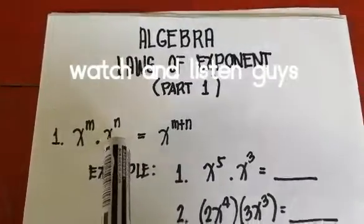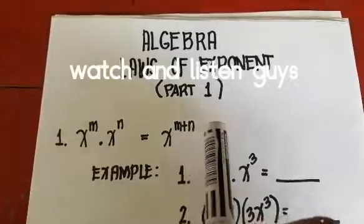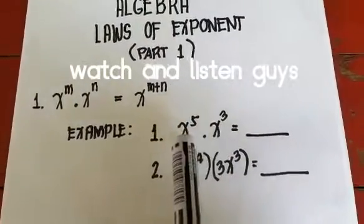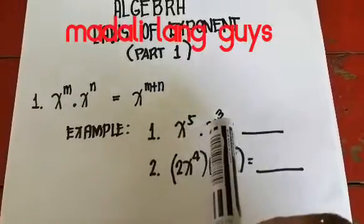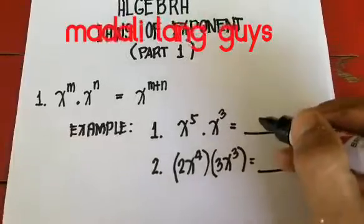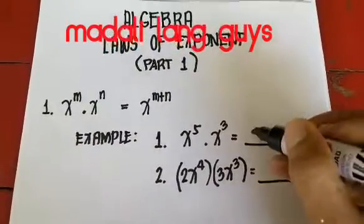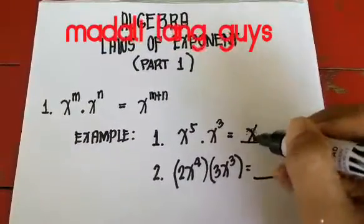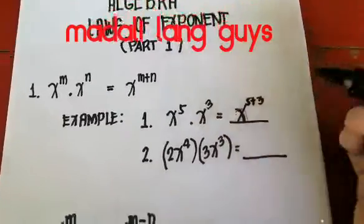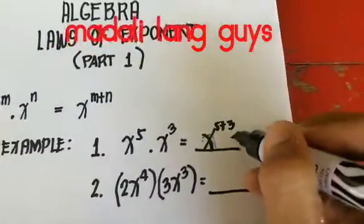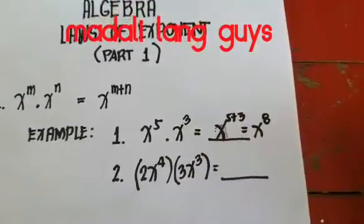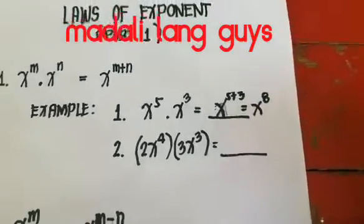You just add the exponents. Okay, so example number one — same base x and x — we'll copy the base which is x and add the exponents, so that is five plus three. The answer is x raised to eight.